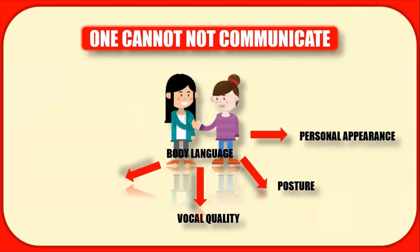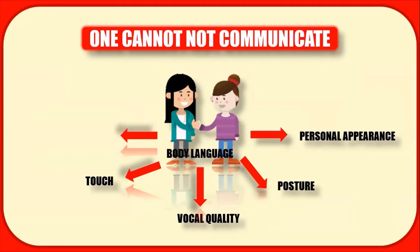Now we move on to touch, which is basically the most important aspect of body language. It is through touch that we can identify the actual intention of a person. Someone might appear very friendly, but from the touch we can identify whether their intention is good or bad. Nowadays it is mandatory for parents to teach children not to rely solely on facial expressions to judge a person; when you shake hands, you should be able to identify the person's intention.